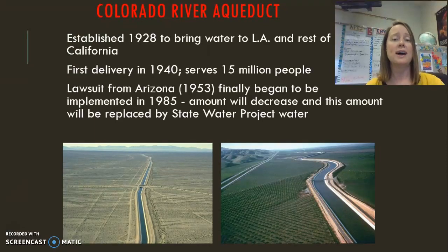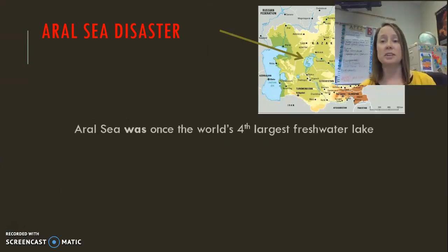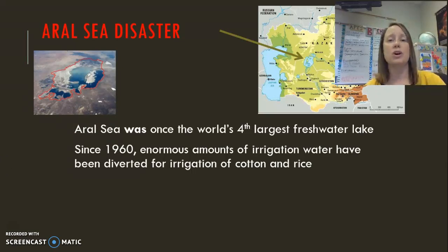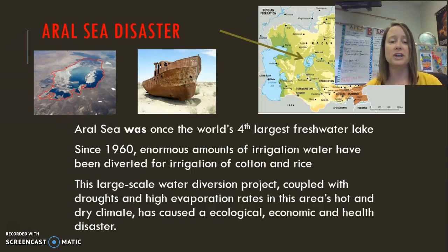The Aral Sea is another area where water diversion projects have significantly decreased the available water. It was once the world's fourth largest freshwater lake, but beginning in 1960 they started growing cotton and rice — water-intensive crops — in this dry region, diverting water from two rivers that fed into the Aral Sea. In the picture, the red outline shows the original size of the Aral Sea and how much it has decreased due to this large-scale water diversion, combined with droughts and evaporation.